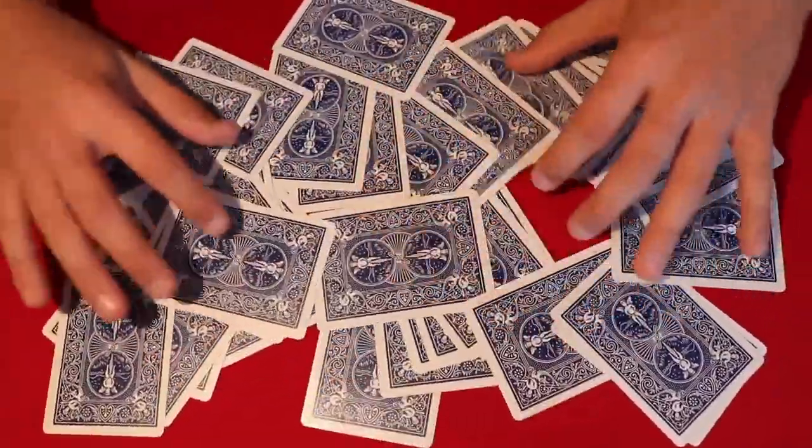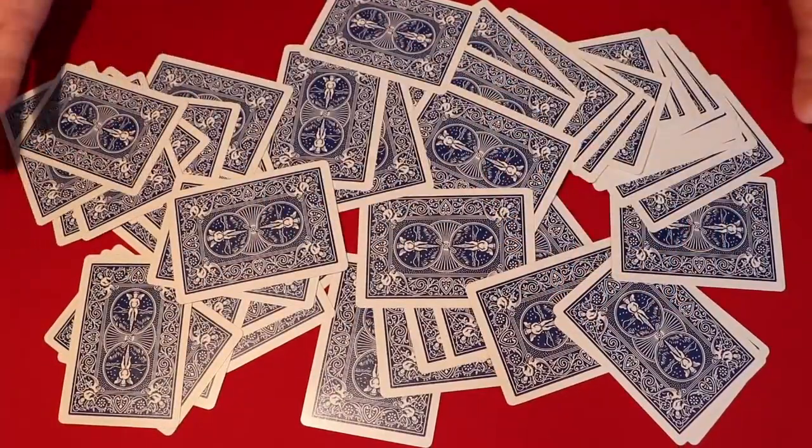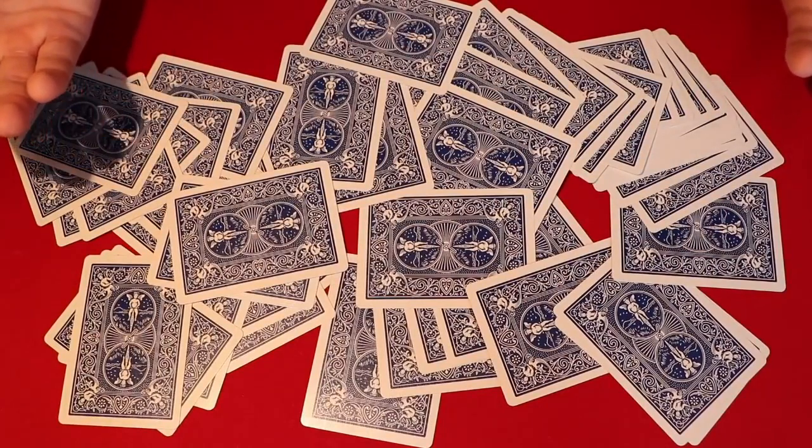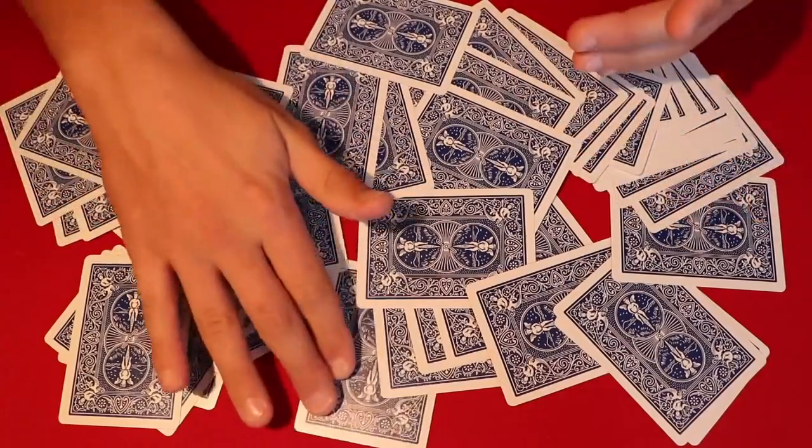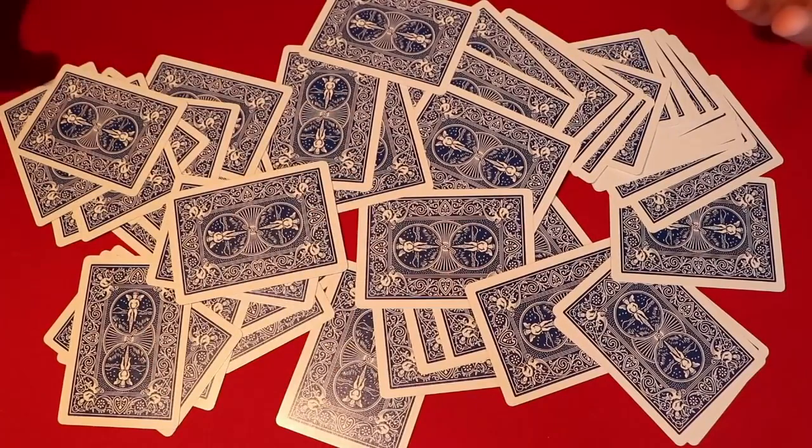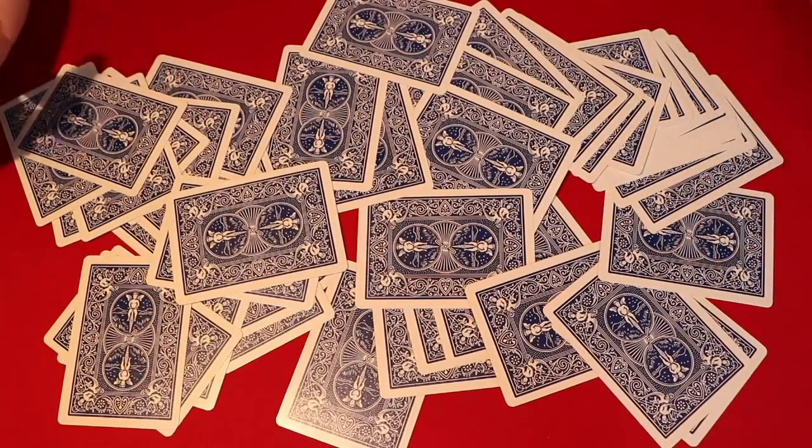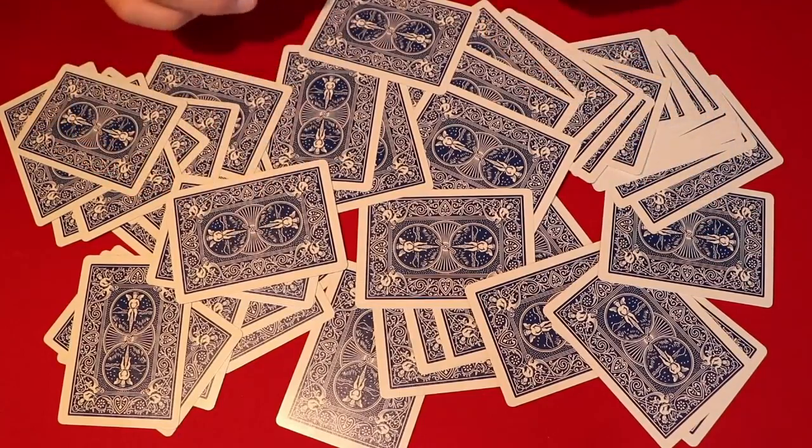You have all the cards here in a big wash and it looks to your spectators like it's completely random. From here what you have to do is you already know the bottom card I believe you said was the Five of Spades. You're going to touch any card - it doesn't matter - but you don't want to pick up the Five of Spades, you just want to know where it's at. At this point, what you got to do is look for any random card and just touch the back of it.